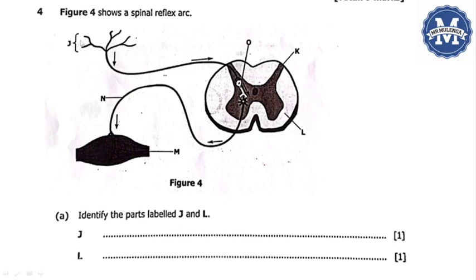Here is our question 4. The question reads, figure 4 shows a spinal reflex arc. This is figure 4, which is showing the spinal reflex arc. A spinal reflex arc is just a neural pathway that controls a reflex, which is a rapid, involuntary, and unconscious response to a stimulus. This is located within the central nervous system, and it occurs in the spinal cord. This spinal reflex arc, you can see, is labeled J, N, M, O, K, and L.